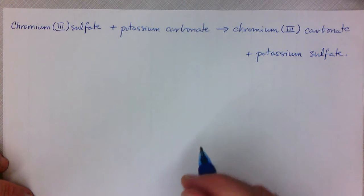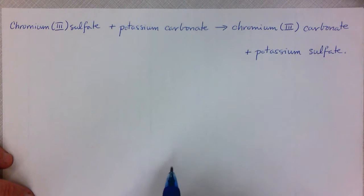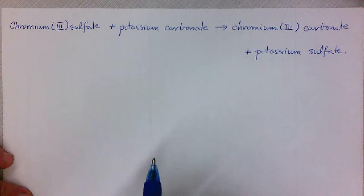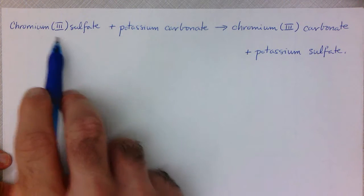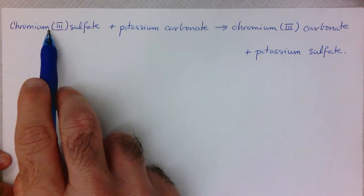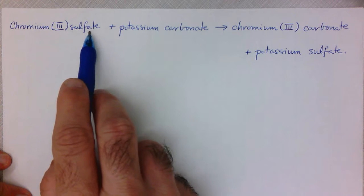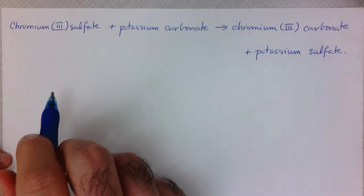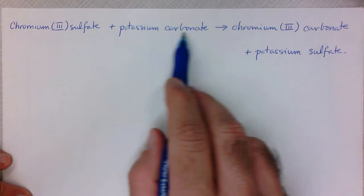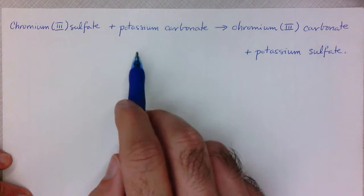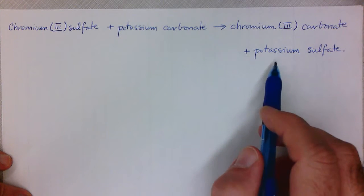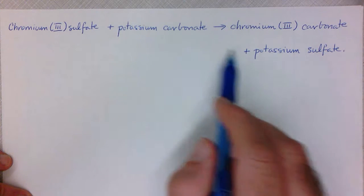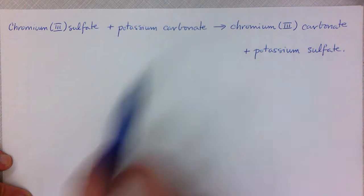Let's take a look at a third example of writing a balanced chemical equation. Here we've got something a little more complicated than the other two. We've got chromium 3 sulfate, and we see a multivalent metal but also sulfate, which should make us think of polyatomic ions. Then potassium carbonate — again a polyatomic ion — and it gives chromium 3 carbonate plus potassium sulfate, so we're definitely seeing some swapping going on.